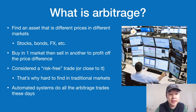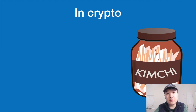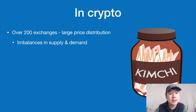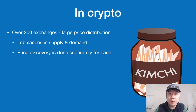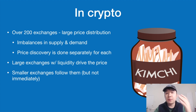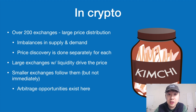In traditional markets, arbitrage is hard to find because it's an old technique and many people are already taking advantage of it. Automated systems do most of the arbitrage trades these days to keep prices stable across markets, so retail traders can't really do this anymore. However, in the crypto world, it's quite different — there are over 200 exchanges with large price distribution due to imbalances in supply and demand, and price discovery is done separately for each exchange. Sometimes the big exchanges change price and small ones are slow to catch on — that is where arbitrage opportunities exist.